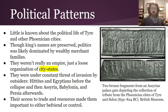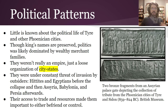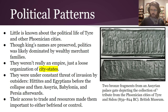The problem was that they were under constant threat of invasion by outsiders — the Hittites and Egyptians before the Bronze Age Collapse, and then afterwards by Assyria, then Babylonia, then Persia — just sweeping in from Mesopotamia and variously threatening them, taking money, or trading with them, and then later conquering them. Their access to trade resources made them really important to either make friends with or control. We have some bronze fragments from an Assyrian palace gate showing them collecting tribute — basically bribe money to not destroy the Phoenician cities.